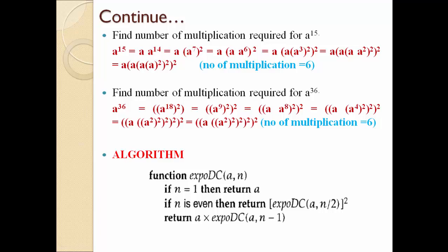As we discussed, if you want to find how many multiplications are required, we follow this algorithm — that is, our recurrence equation. We check the three conditions, put in different values, and at the end identify how many multiplications and how many squarings are there. Based on that we determine how many total multiplications are required.